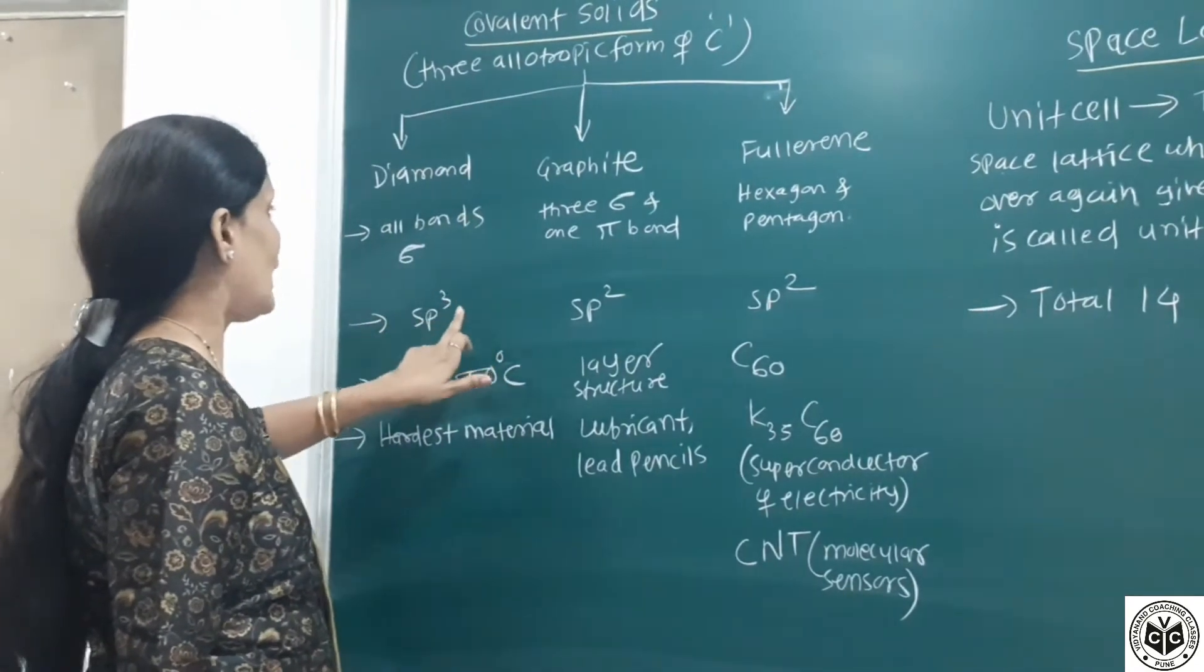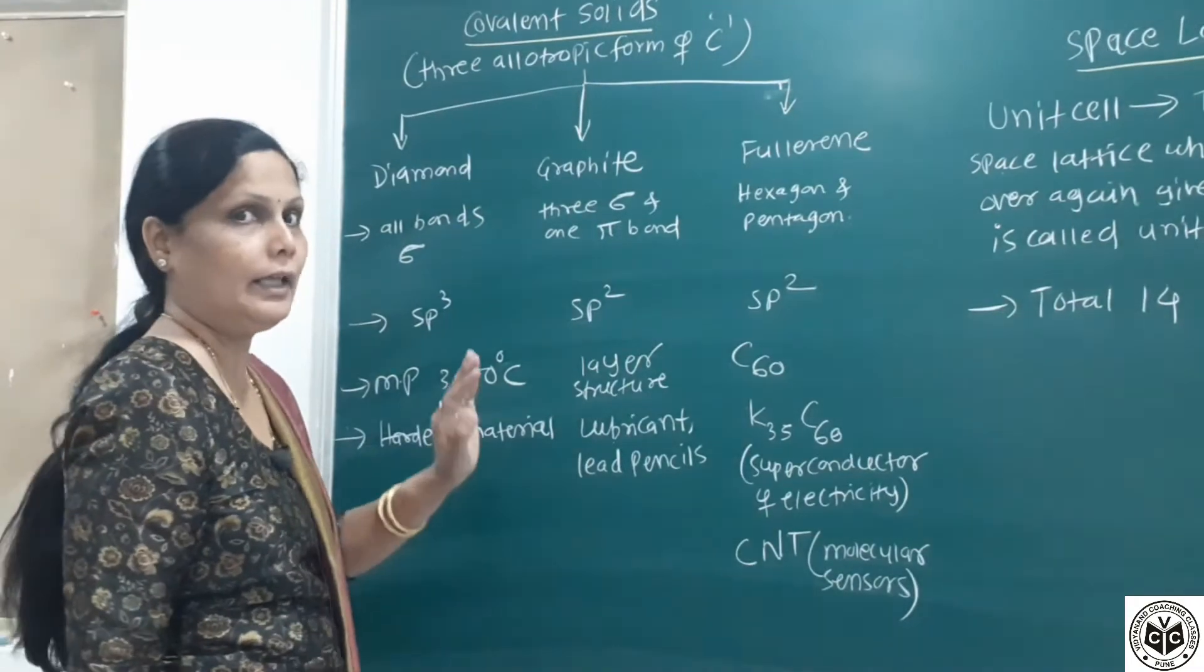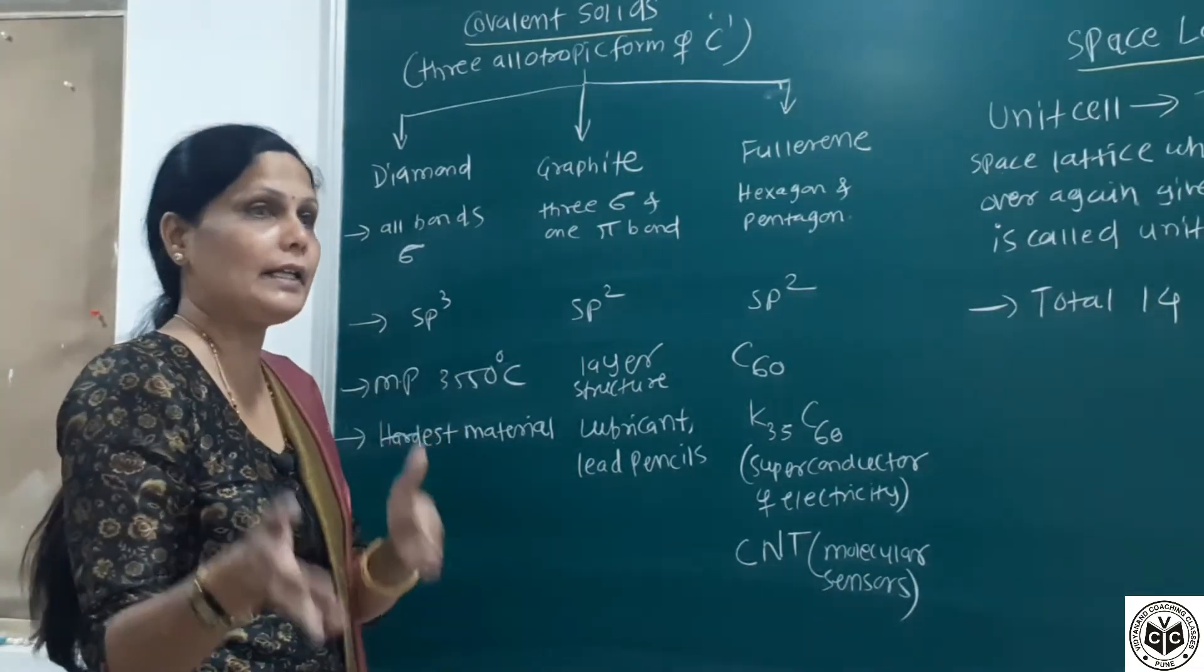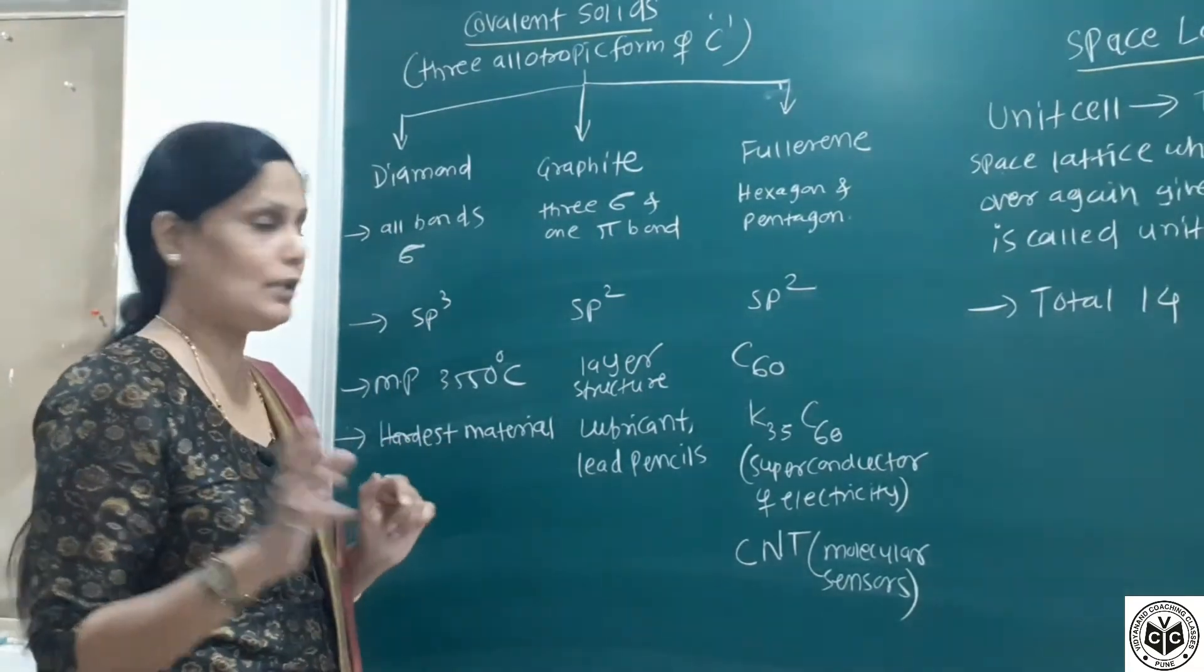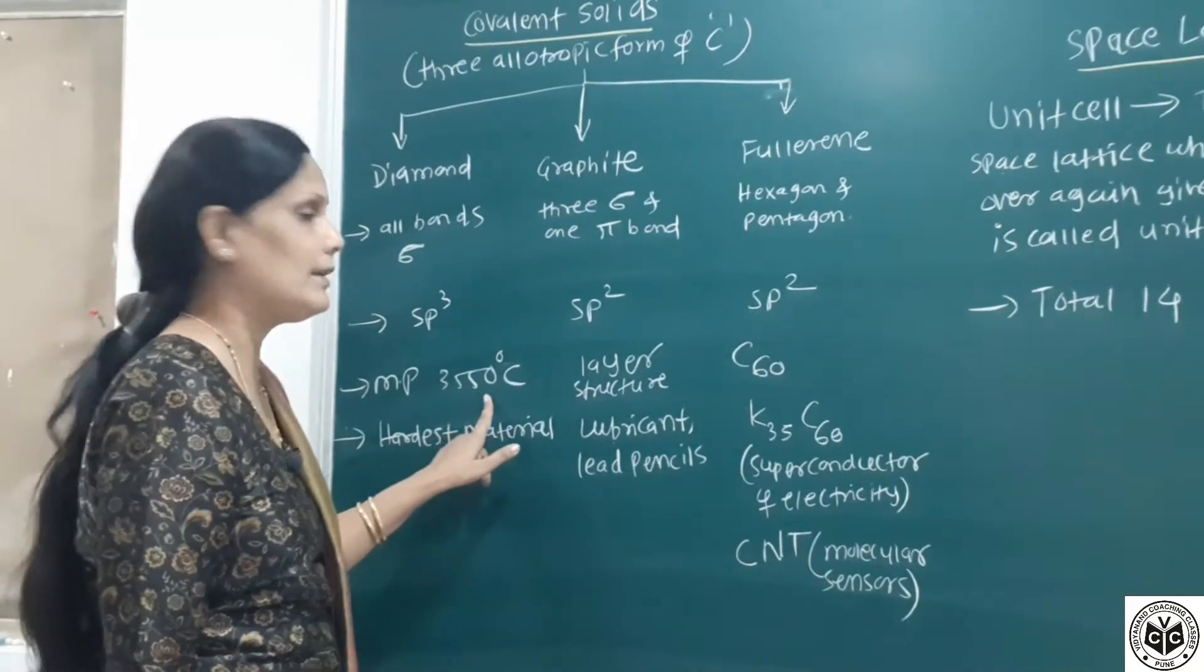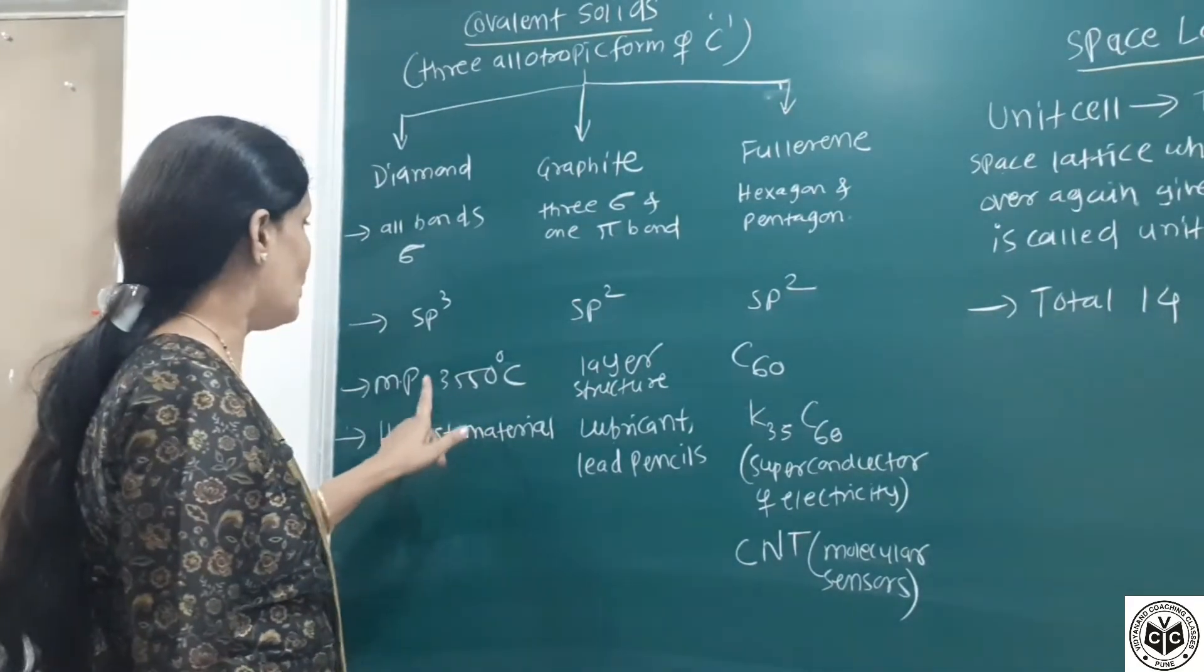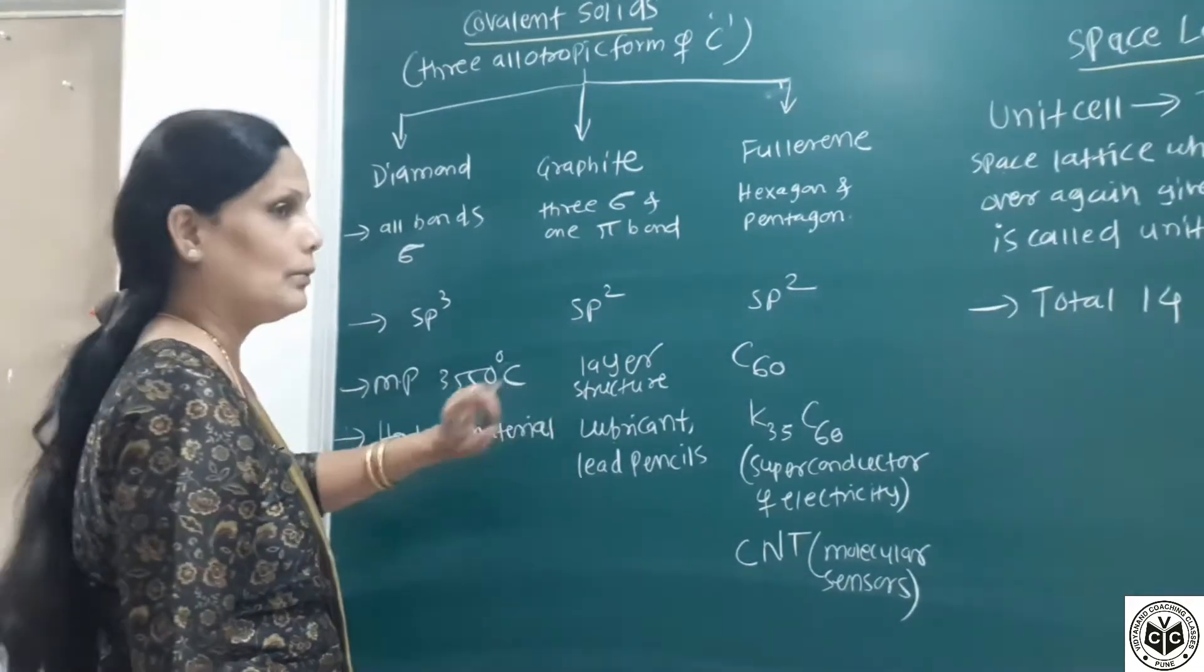Diamond is the hardest material present on earth. Its melting point is 3550 degrees Celsius. Though it is a hard material, it is used for cutting purposes as a cutting tool.